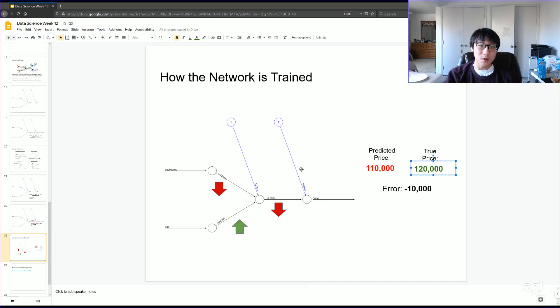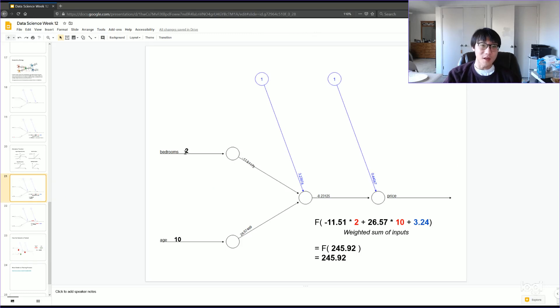What we're doing is we're going through every single observation in our data. So, for example, for this initial neural network, I pictured that the initial number of bedrooms was two and the age of the house was 10. So let's say that's the first observation in our data. But then the next observation in our data might be a house that has four bedrooms and that's 30 years old.